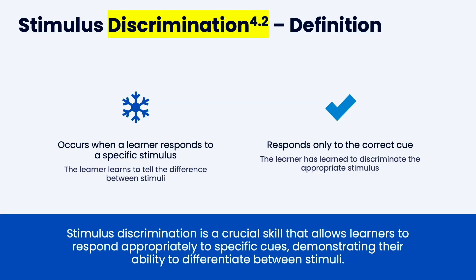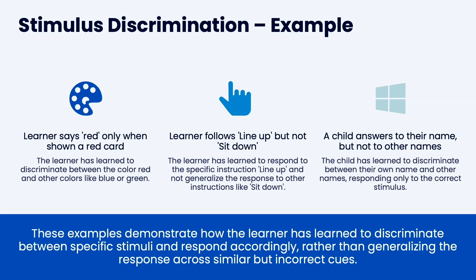Stimulus discrimination occurs when a learner responds to specific stimuli — the learner learns to tell the difference between different stimuli and responds only to the correct cue. The learner has learned to discriminate the appropriate stimuli. This is what discrimination training is. It's how we do matching to sample, reflexivity, transitivity, all those things. We do that through discrimination training, and that's a teaching intervention — it could fall into differential reinforcement or antecedent. An example: the learner says red when shown a red car, and doesn't say red when not shown a red car.